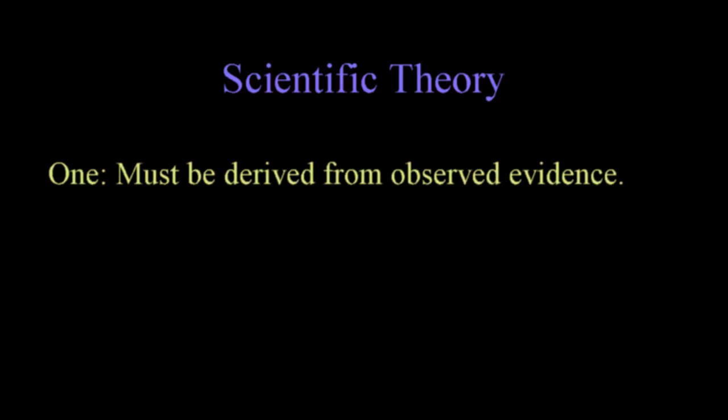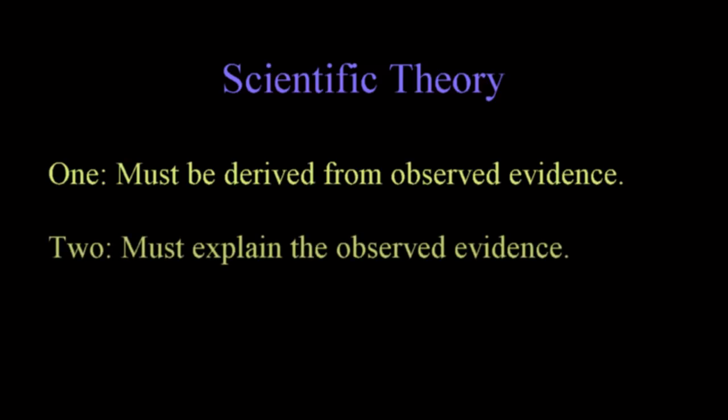Thus, a scientific theory has three specific requirements. First, it must be derived from observed evidence. As a theory is a model for understanding observed phenomena, it only makes sense that there are observed phenomena to explain. Second, it must explain the observed evidence. This is what separates a theory from a law or a fact. Facts and laws are certainly observed phenomena, but that is all they are. A theory is designed to explain why or how the phenomena occur.